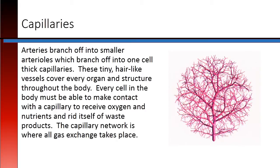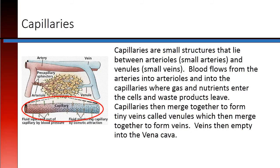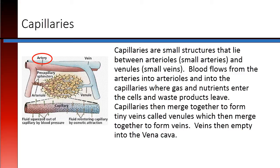Arteries branch off into smaller arterioles, which then branch off into one-cell-thick capillaries. These tiny, hair-like vessels cover every organ and structure throughout the body. Every cell in the body must be able to make contact with a capillary to receive oxygen and nutrients and rid itself of waste products. The capillary network is where all gas exchange takes place. Capillaries are small structures that lie between arterioles, which are small arteries, and venules, which are small veins. Blood flows from the arteries into the arterioles, and then into the capillaries, where gas and nutrients enter the cells and waste products leave.